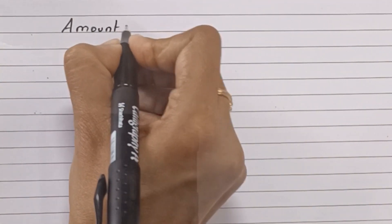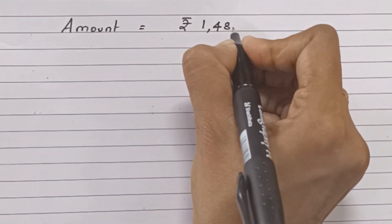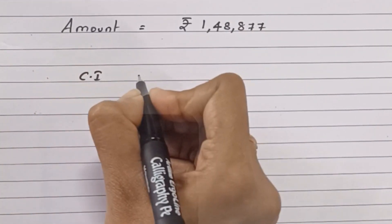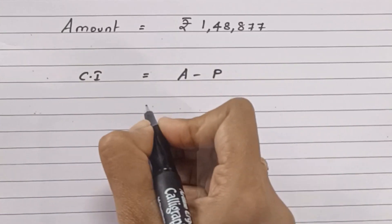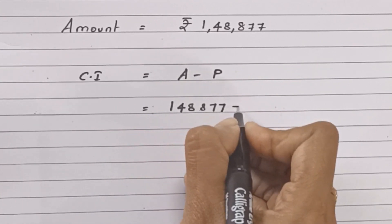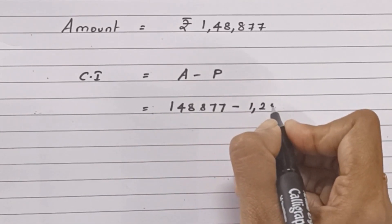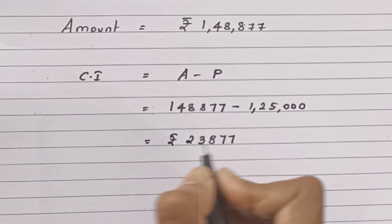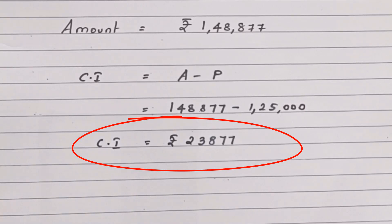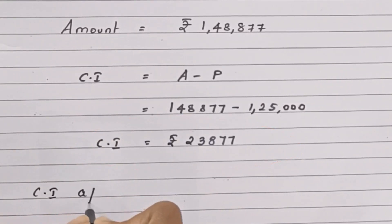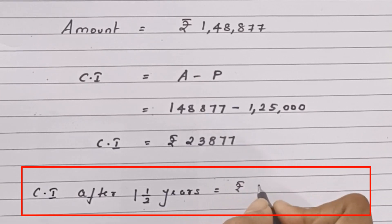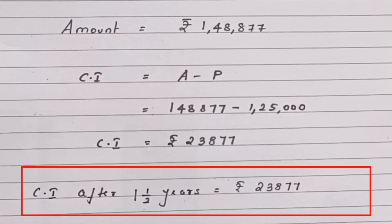So the amount is equal to rupees 1,48,877. To calculate the compound interest, we subtract the principal from the amount: 1,48,877 minus 1,25,000. On subtracting, we get rupees 23,877. Therefore, the compound interest for one and a half years is equal to rupees 23,877.